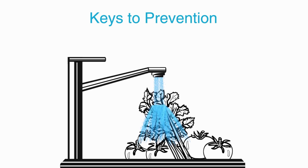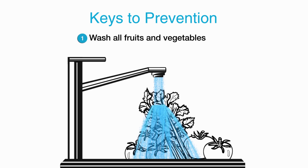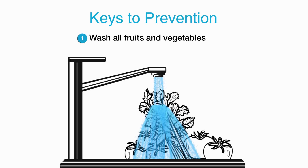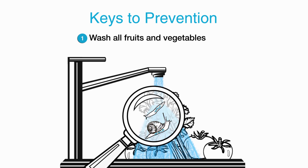Rat lungworm disease is preventable. Protect yourself and others from rat lungworm disease. Wash all your fruits and vegetables. Rinse them under running water before eating or cooking.